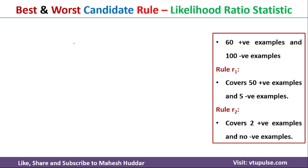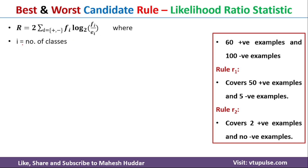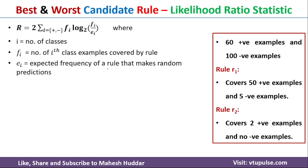Now I will discuss how to find the best and worst candidate rule using likelihood ratio statistic. R is equal to 2 times the summation over all possible classes — plus and minus — of f(i) log f(i) divided by e(i) to the base 2. Here, f(i) is the number of ith class examples covered by that particular rule, and e(i) is the expected frequency of the rule that makes random predictions.